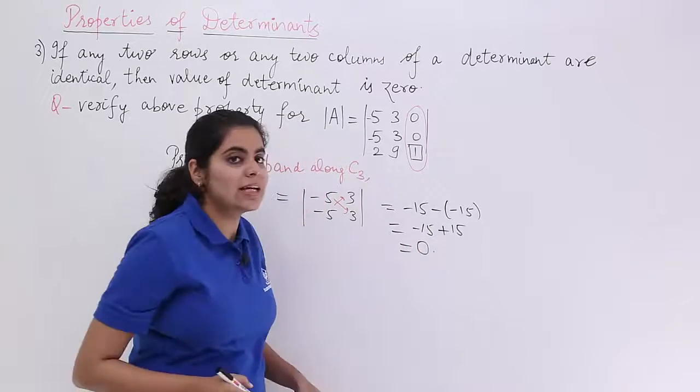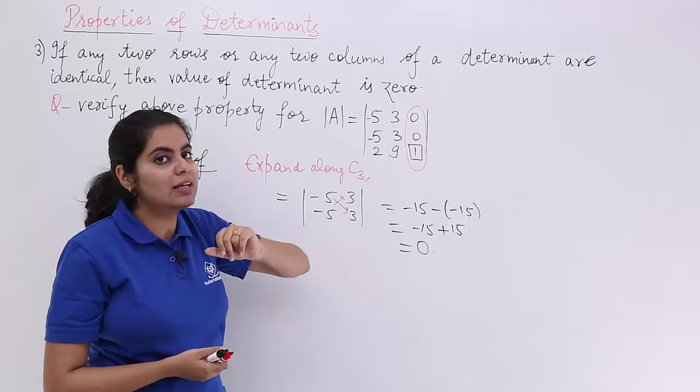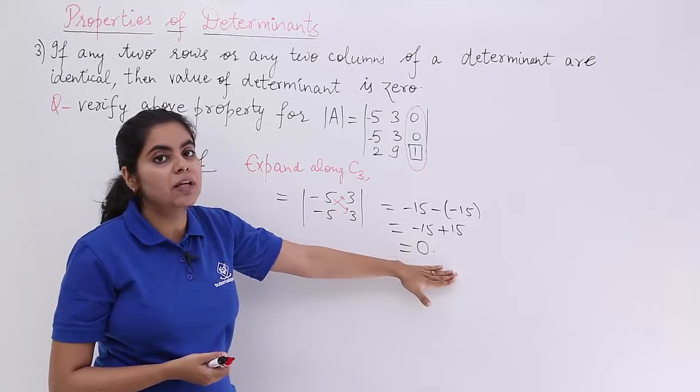Why? Because these things cancel each other. So that is what we meant. That if any 2 rows or any 2 columns are identical, the value of the determinant should be 0.